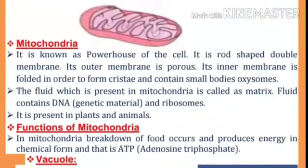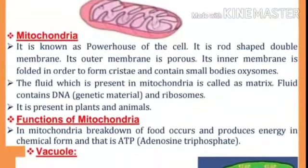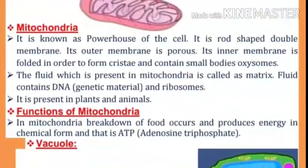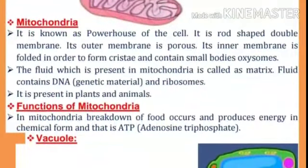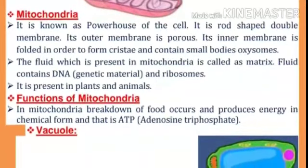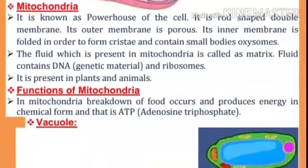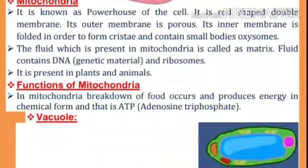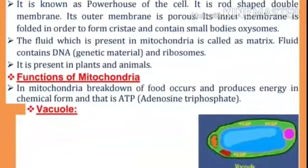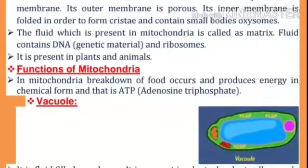Mitochondria is known as the powerhouse of the cell. It is rod-shaped and double membrane. Its outer membrane is porous. Its inner membrane is folded to form cristae and contains small bodies called oxysomes. The fluid present in mitochondria is called the matrix. The fluid contains DNA, genetic material, and ribosomes.